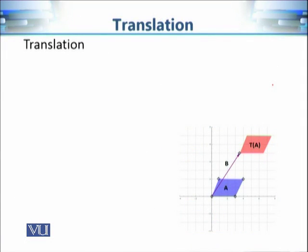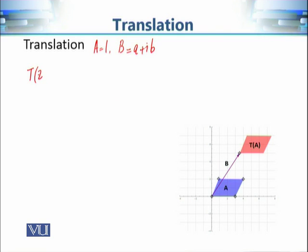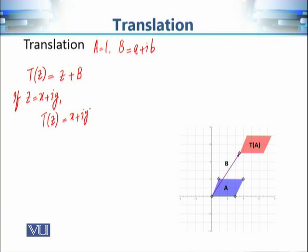Our first example is the case of translation. In translation we choose a to be equal to 1, and b is any complex number a + ib. We call this transformation T, so T stands for translation. Thus T(z) becomes z + b. In particular, if z = x + iy, then T(z) becomes x + iy + a + ib.